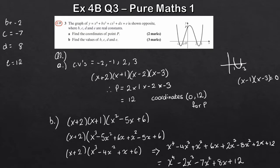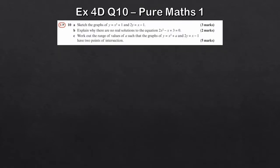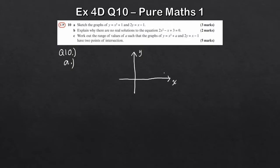The next question asks us to sketch two graphs, explain why there are no real solutions to a quadratic, and then in part c work out a range of values of a for two points of intersection. Let's start with part a. I'm no artist — as long as the graphs cut through the axes correctly that's fine. For y=x²+1, this is a quadratic shifted up by one, so it goes through the y-axis at one.